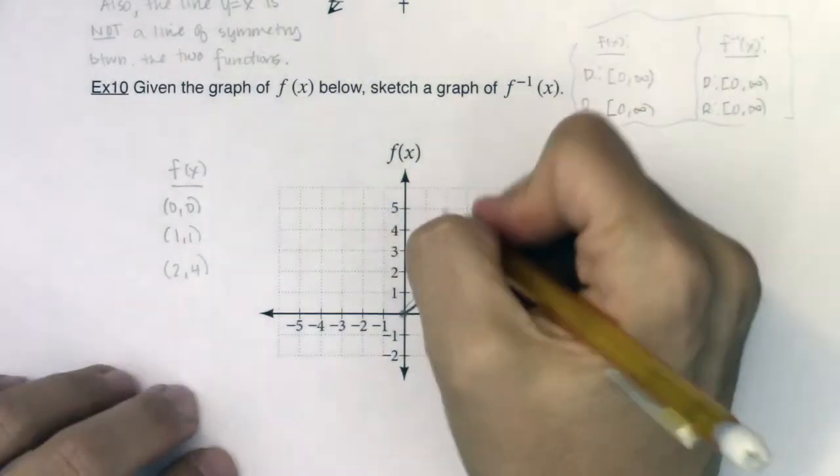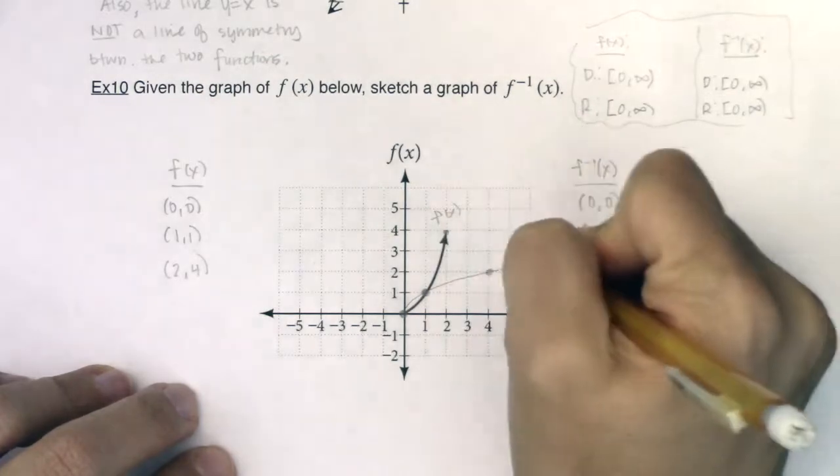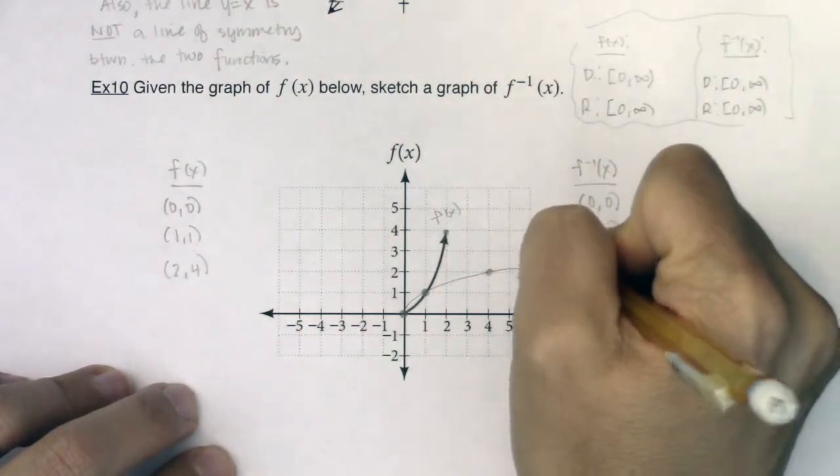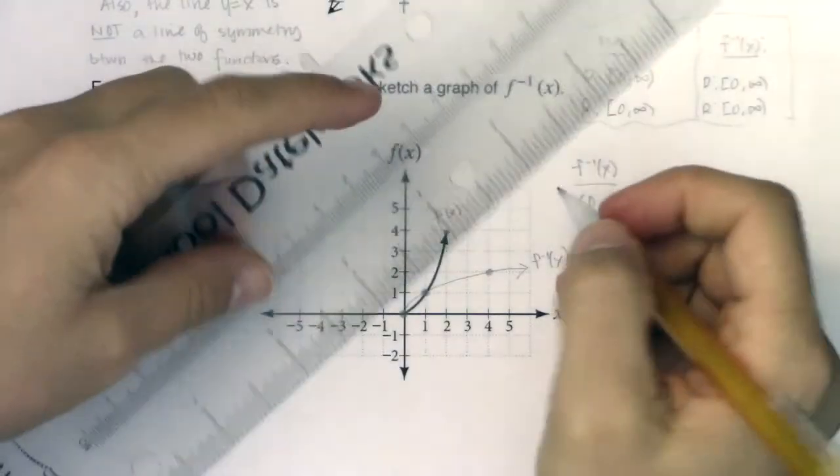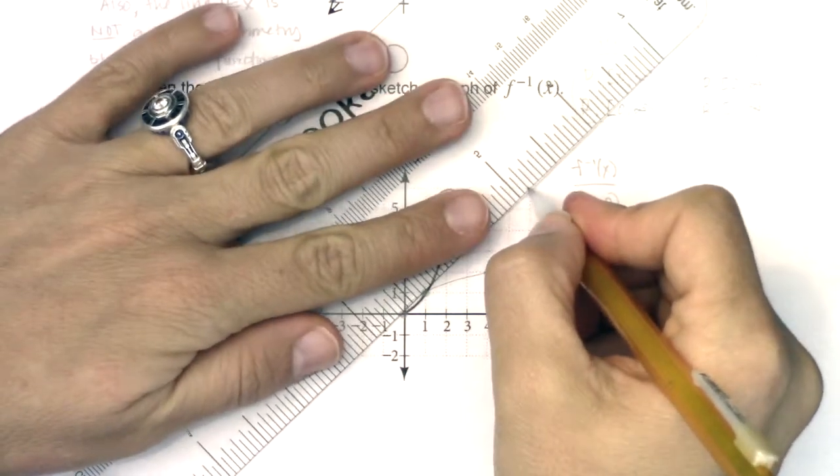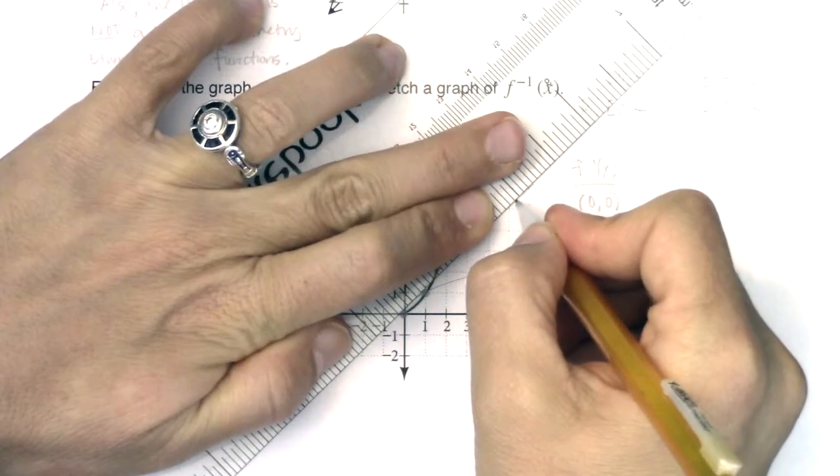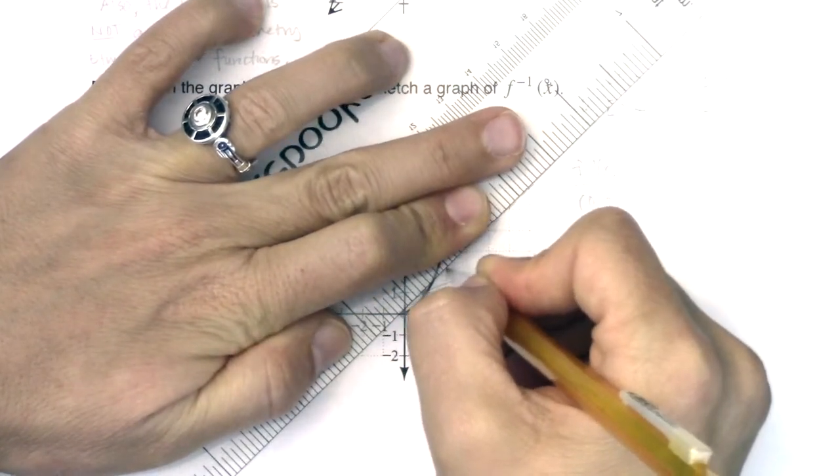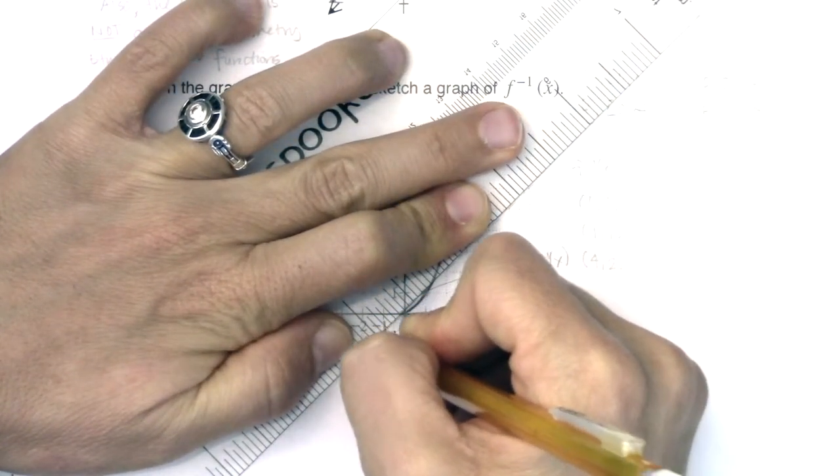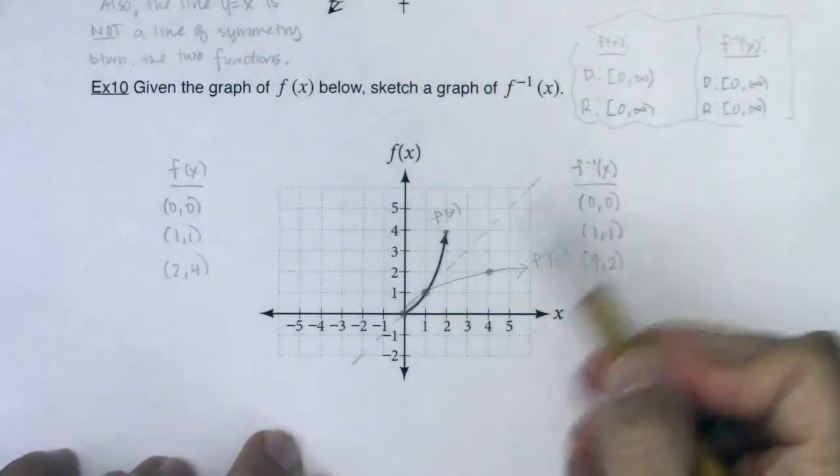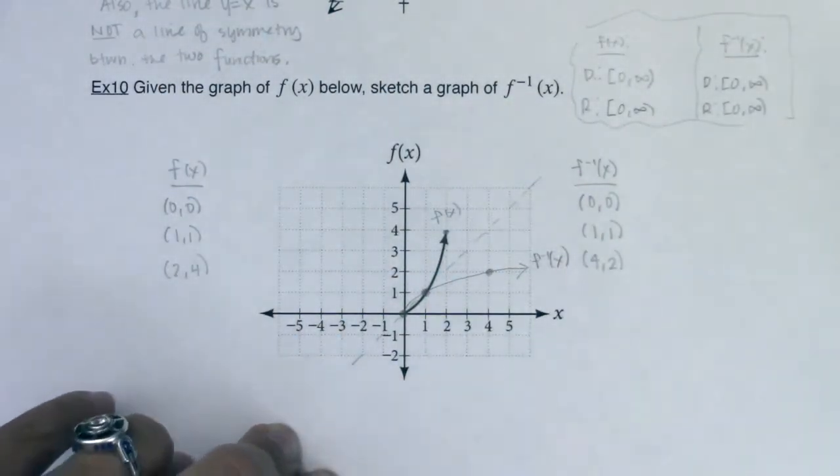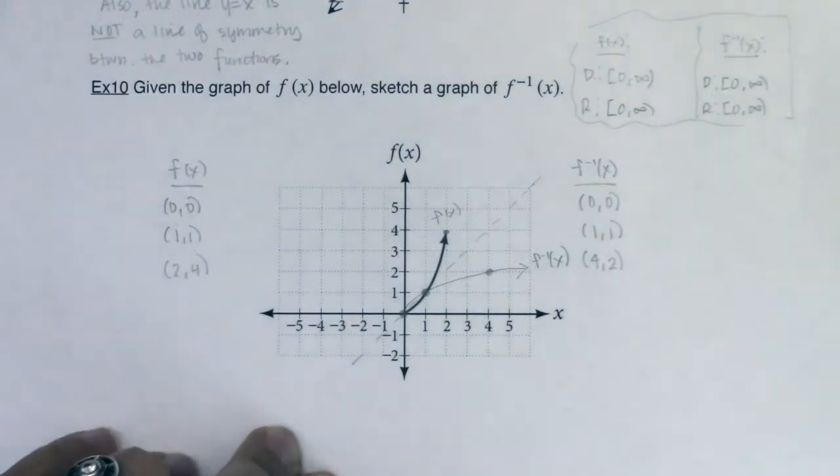I see f(x) here and f inverse of x over here. Let me take my ruler and draw in y equals x as a dotted line. That does look like a line of symmetry between those two functions, so I'm pretty happy with that.